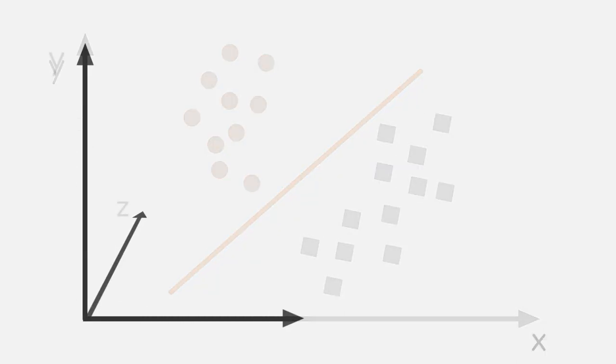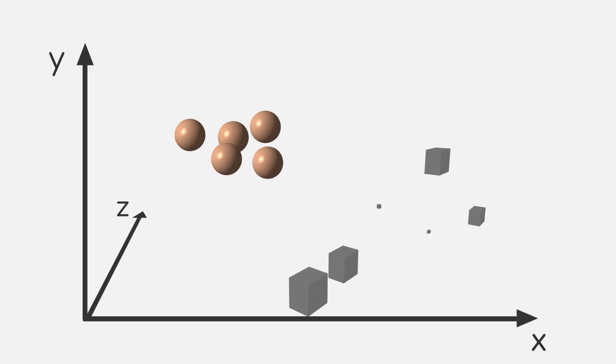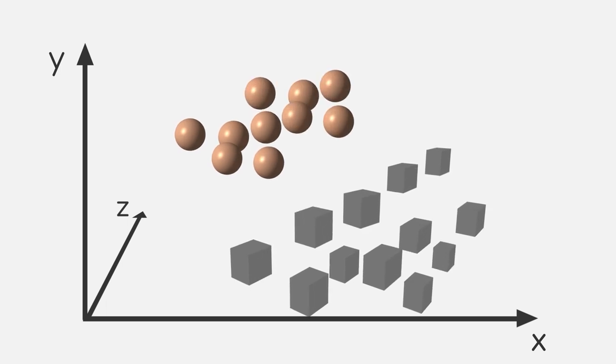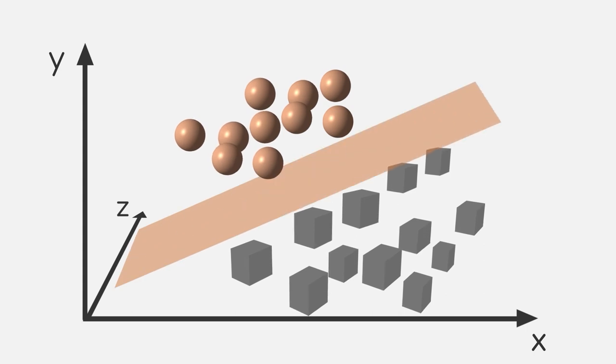But what if we go to higher dimensions? In three-dimensional space, a linear separation of two classes can be seen as a straight cut between the two classes. Let's say we have a basket filled with brown balls and grey cubes, and we now perform a cut right in between to separate them. This cut is also called a hyperplane.